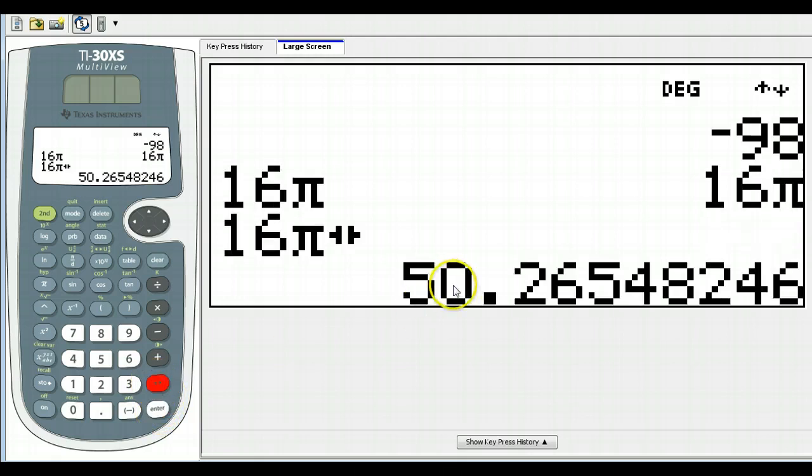well, toggle, then that's approximately 50 point, I'll use two decimal places, so 50.27.